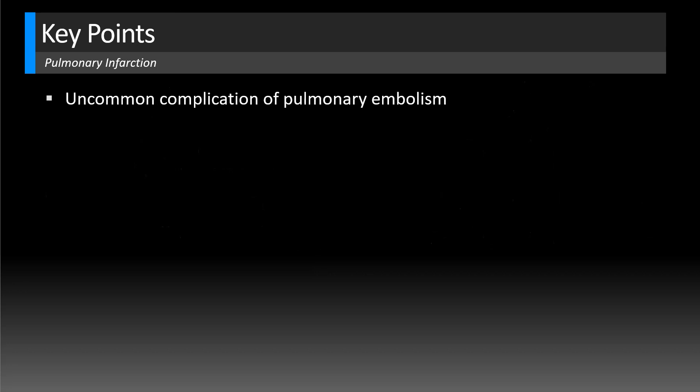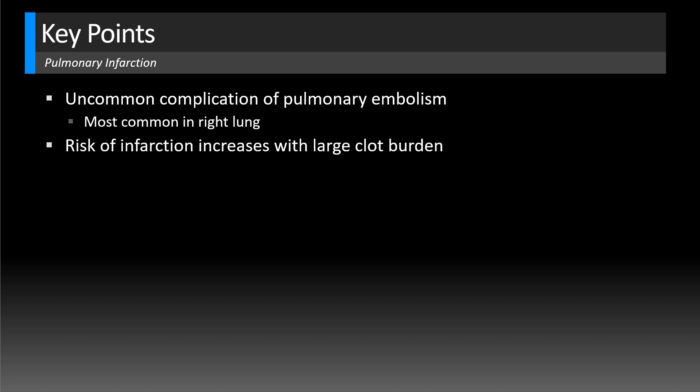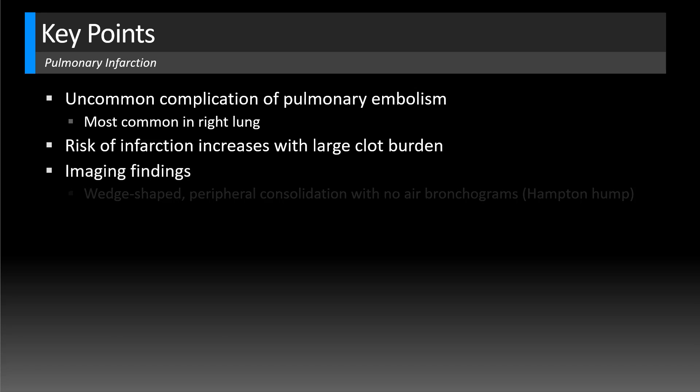Let's talk about a few key points for pulmonary infarction. This is an uncommon complication of pulmonary embolism — we only see it in about 15% of patients with emboli. Interestingly, it's more common in the right lung, though we don't really know why. It's similar to how hemangiomas tend to occur more commonly in the right hepatic lobe — one of the many mysteries of the right side of the human body. The risk of infarction increases with larger clot burden, so when you have really extensive pulmonary emboli, you're more likely to see infarcts.